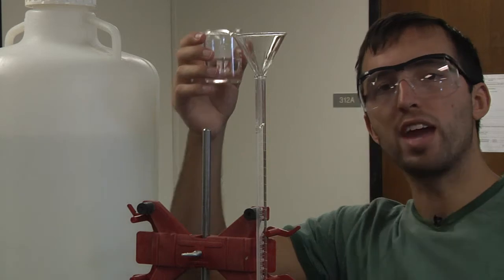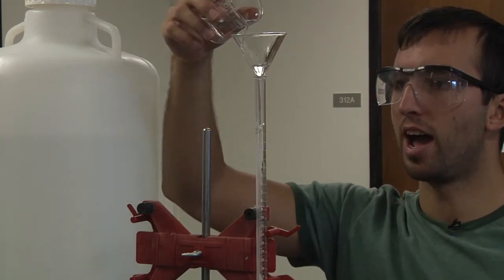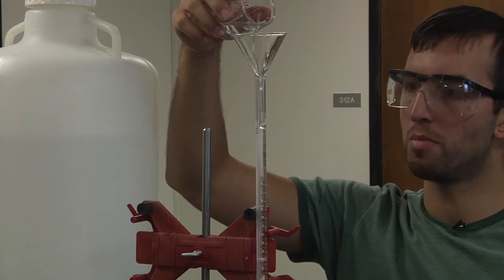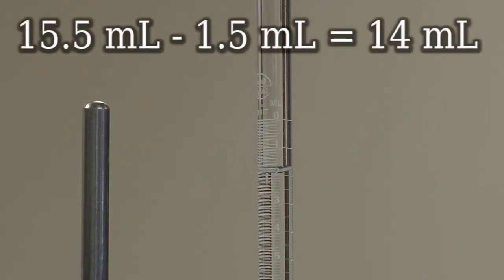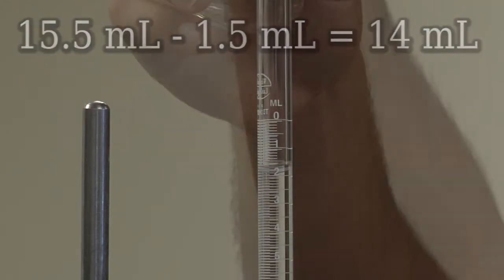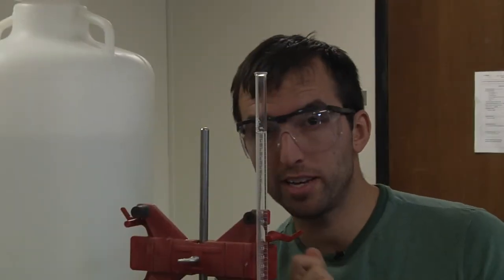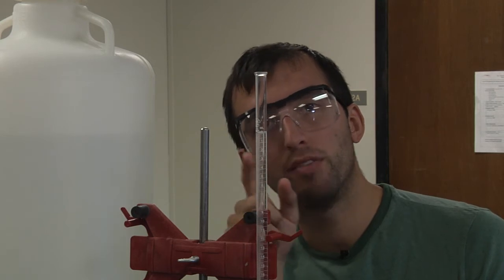Done. We'll use a funnel to get our 60 milliliters inside. You'll want to try to fill it up to the 0 milliliter mark. If you go under you can always subtract from the final volume. For example if you started at the 1.5 milliliter mark and went to the 15.5 milliliter mark we just have to do 15.5 milliliters minus 1.5 milliliters equals 14 milliliters of titrant added. If you go over you can always pour a little bit of the excess out. Remember when measuring look at the bottom of the meniscus.